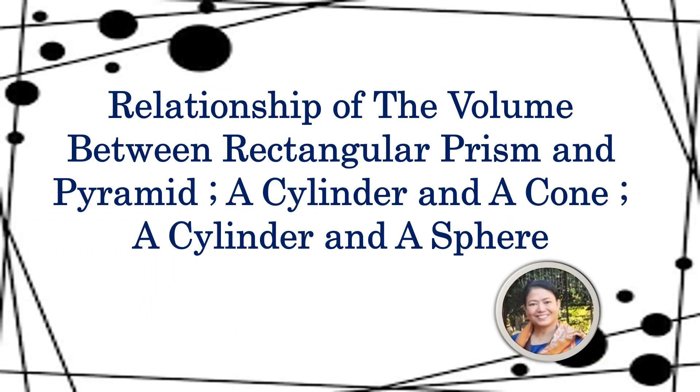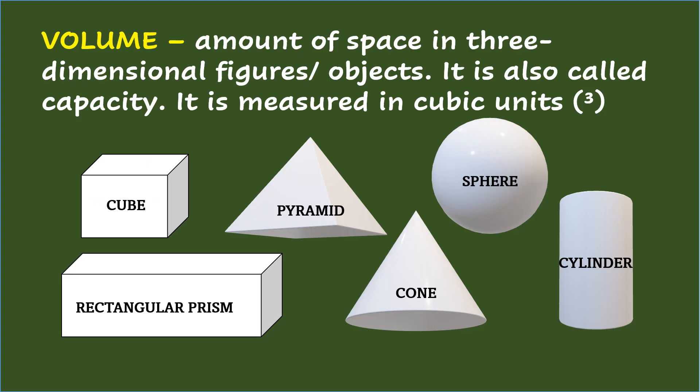Relationship of the Volume between Rectangular Prism and Pyramid, a Cylinder and a Cone, and a Cylinder and a Sphere. Volume is the amount of space in three-dimensional figures or objects like cube, pyramid, sphere, rectangular prism, cone, and cylinder.